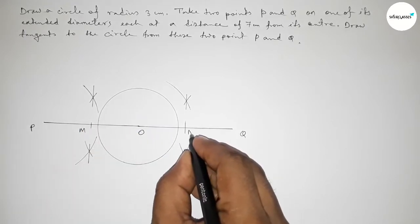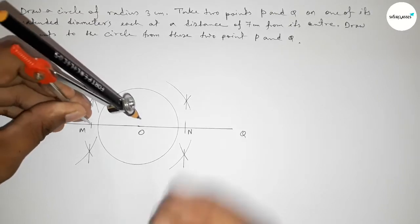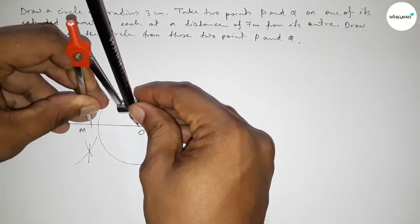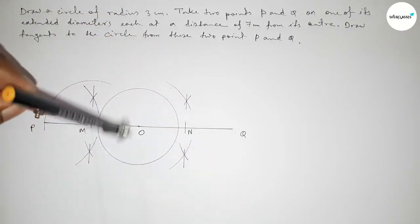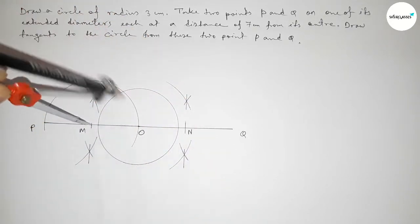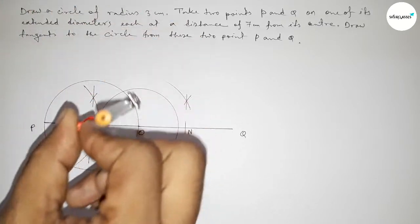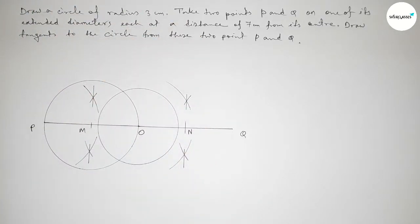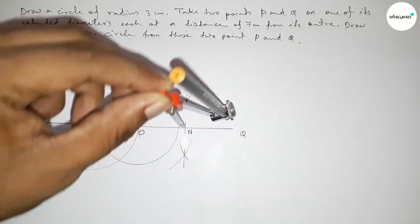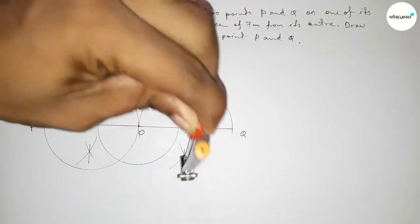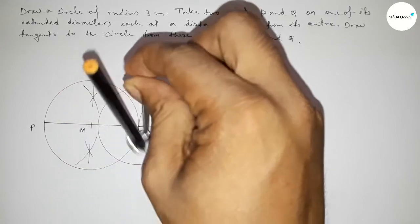Taking the midpoint of PO as point M and the midpoint of OQ as point N. Next, drawing a circle with center M passing through points P and O. Similarly, drawing a circle with center N passing through points Q and O.